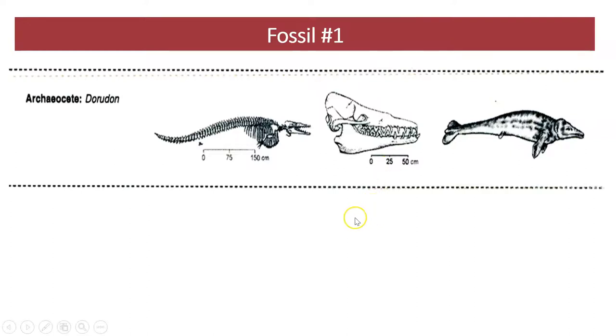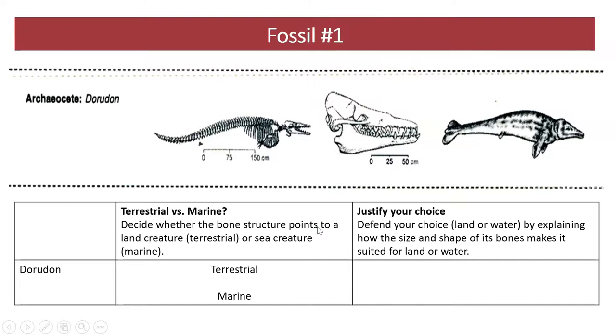After you have closely, and I mean closely, examined the entire skeleton of the creature, decide whether the bone structure points to a land creature, terrestrial, or a sea creature, marine. Then, justify your choice by giving specific examples of how particular bones make it suited for land or water.